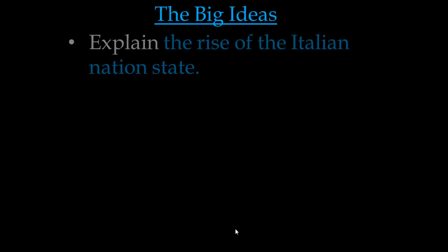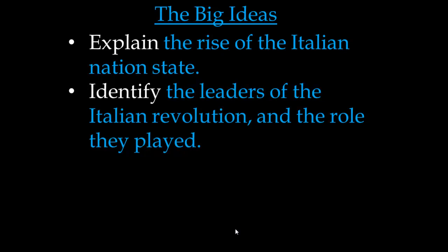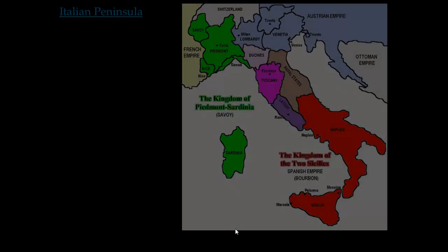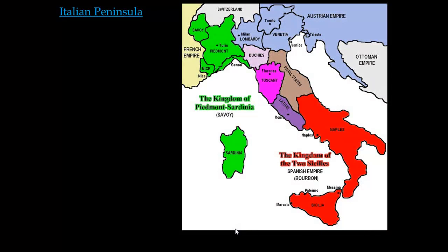Today we're going to be looking at the unification of Italy. Let's start with the big ideas. The first one is explain the rise of the Italian nation state, the second is identify the leaders of the Italian Revolution and the role they played, and the third is identifying the causes and consequences of major political revolutions. It's going to be a longer presentation today, so bear with me.